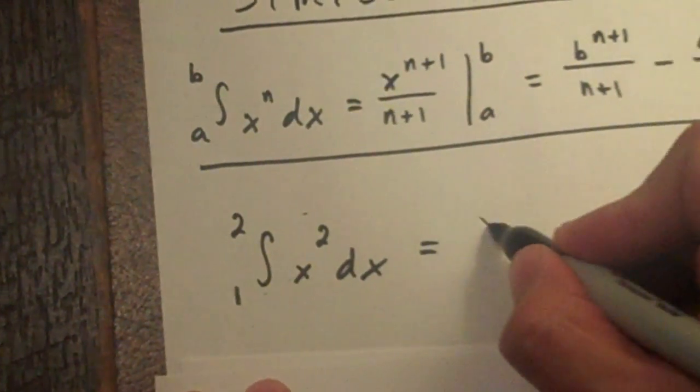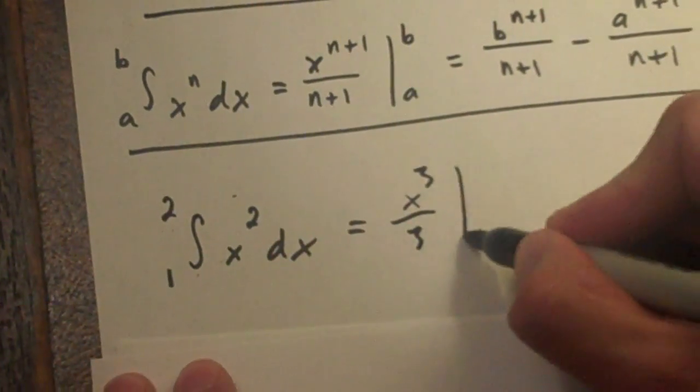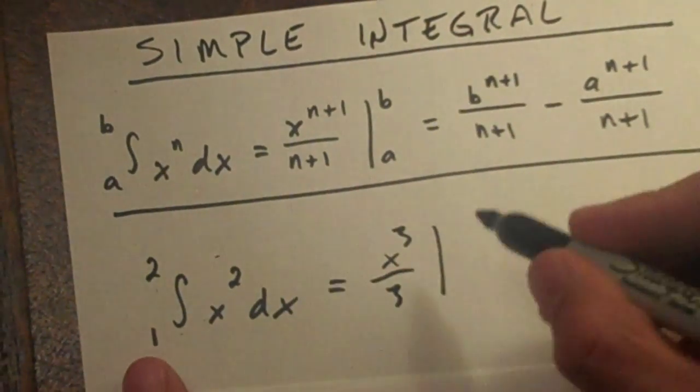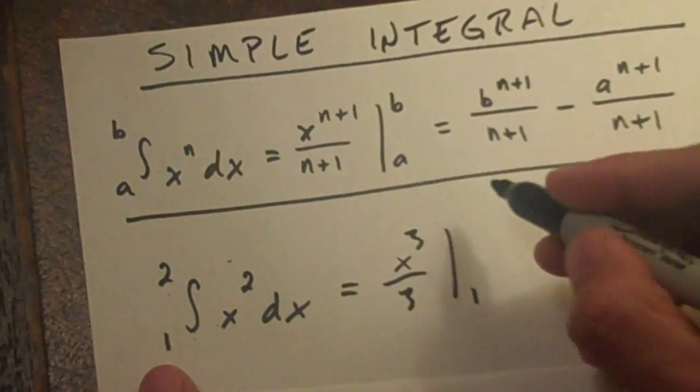So I'll just run through real quick and fill in all the blanks as far as this is concerned. And right here our a is 1 so we'll put 1, and our b is 2 so we'll put 2.